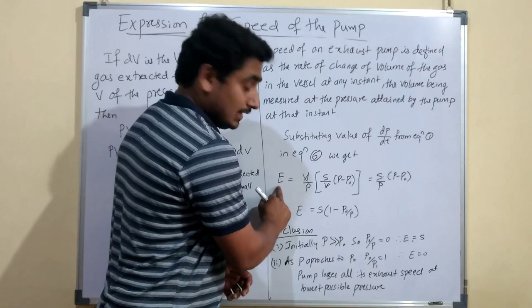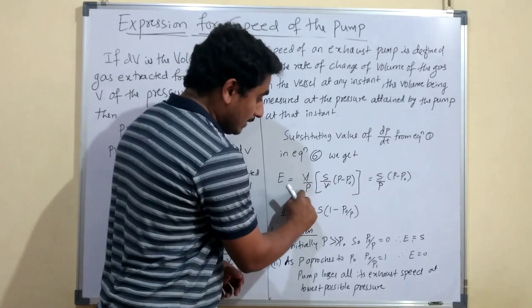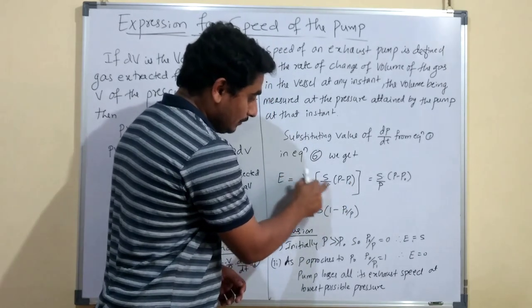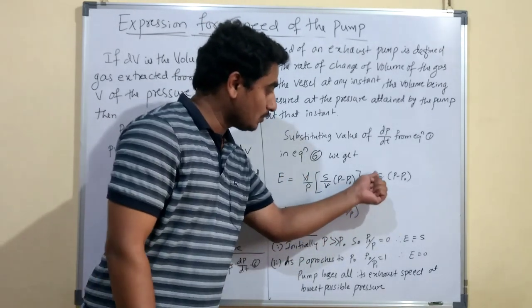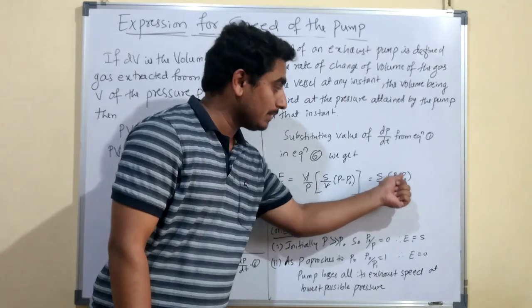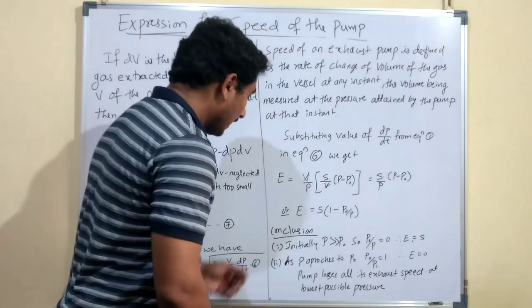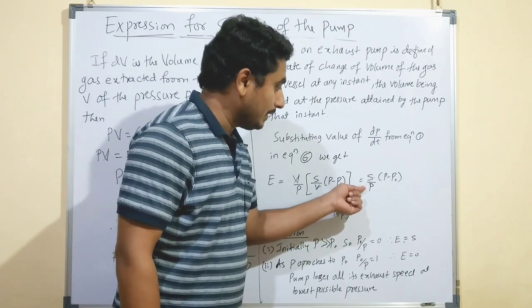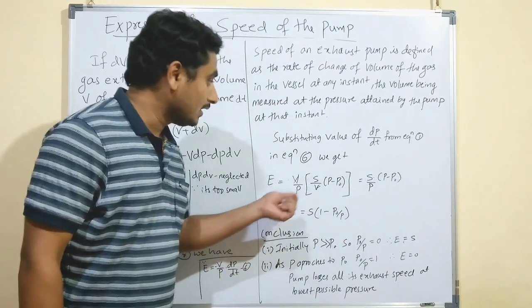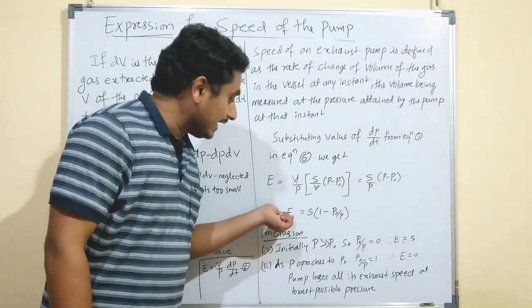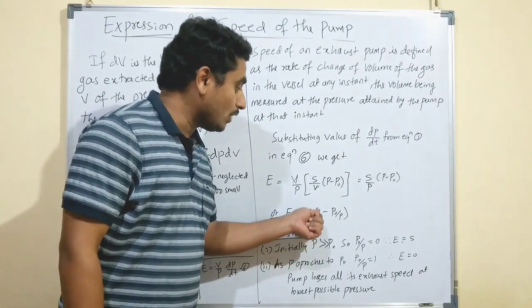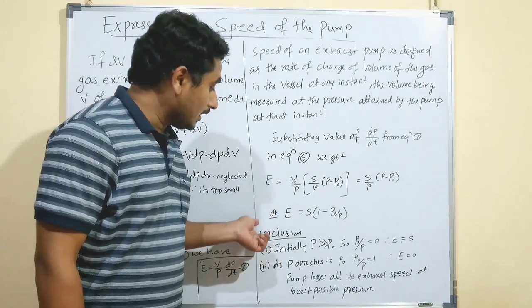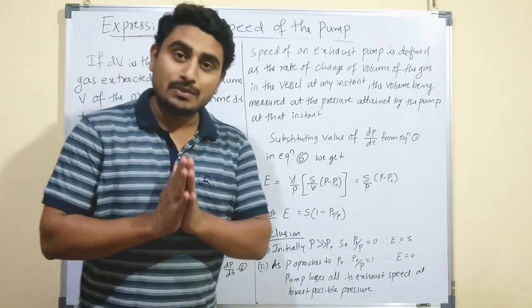Simplifying further: E = (V/P)·(S/V)·(P − P0), the V cancels, and dividing the bracket by P gives: E = S·(1 − P0/P).